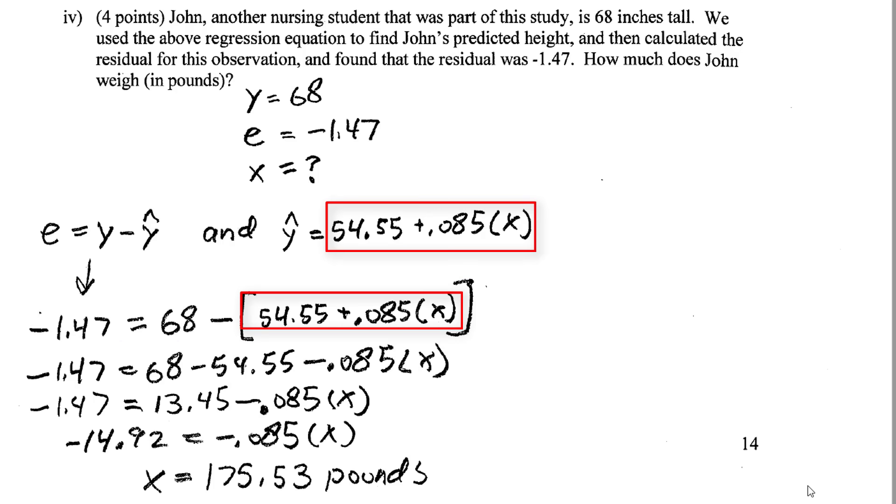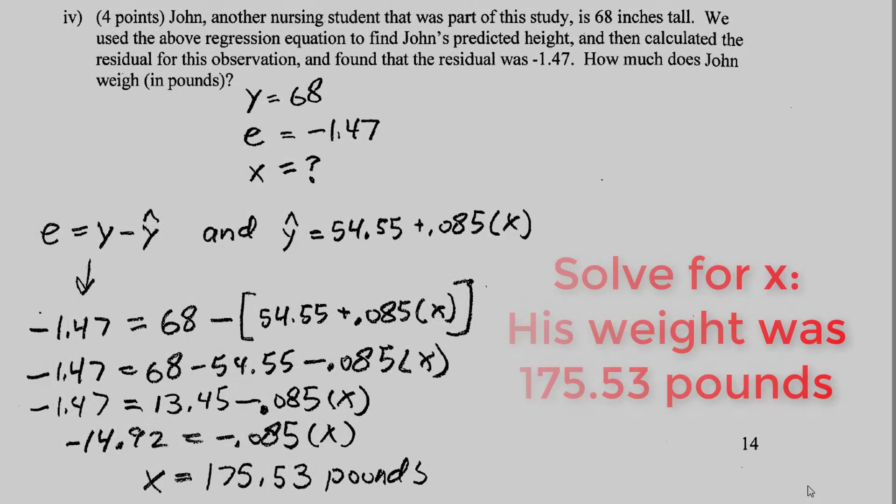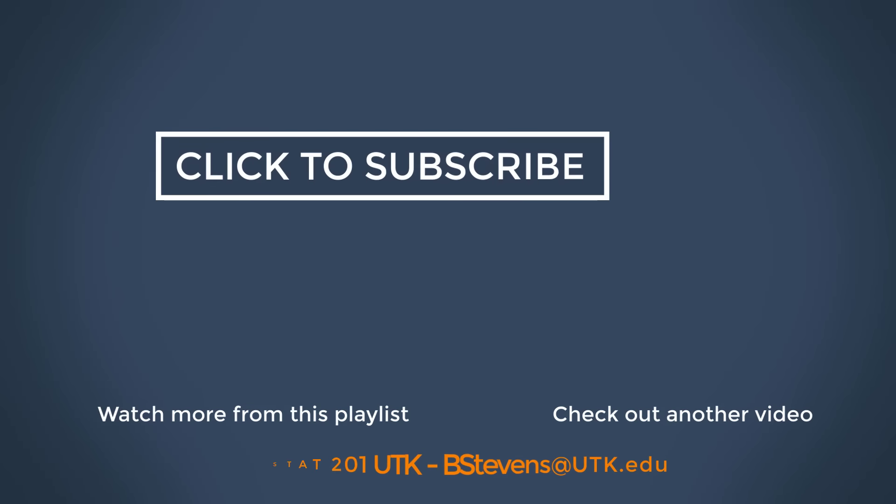Remember, b₀ + b₁x = ŷ. Everything in this bracket equals ŷ. Notice we have just one variable: x. This x is John's actual weight, which we can now solve for.